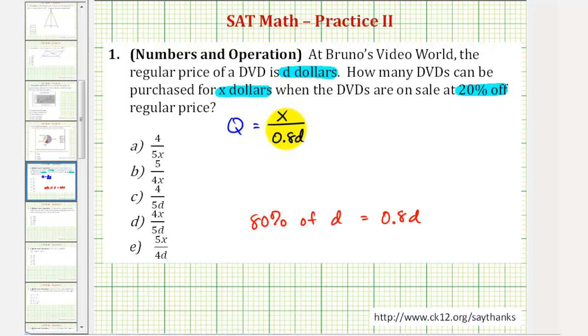So this quotient does tell us how many DVDs we can purchase from the given information, but notice how looking at our choices, they're all in fraction form. So we need to convert this to a fraction.